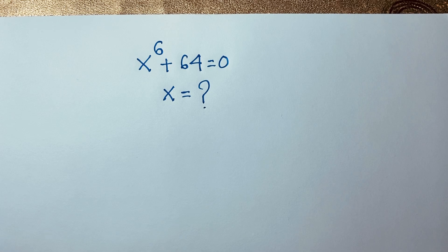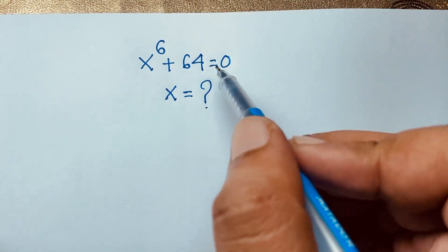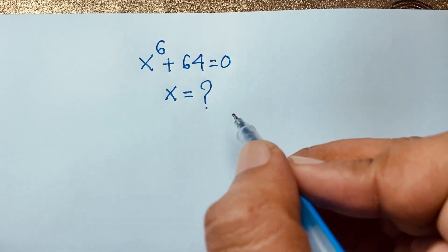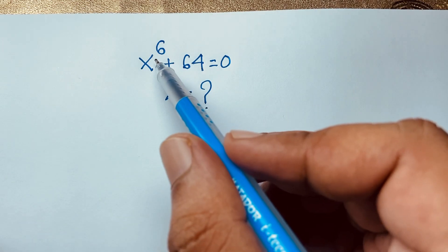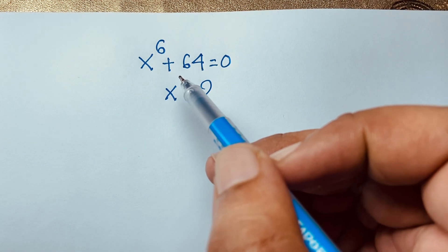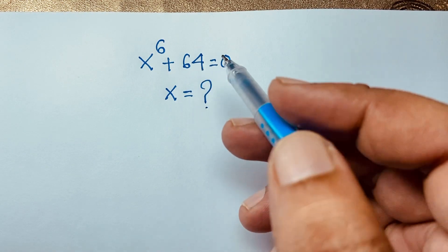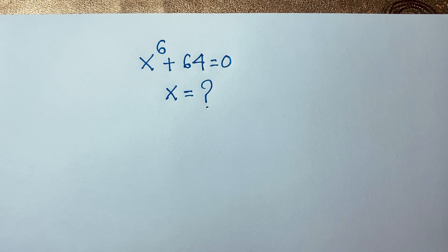Hello everyone. In this video we have solved a nice exponential math problem: x to the power 6 plus 64 is equal to 0. x is equal to what? It has 6 roots. So we will find out the value of x in this exponential expression — how to solve this Math Olympiad question.